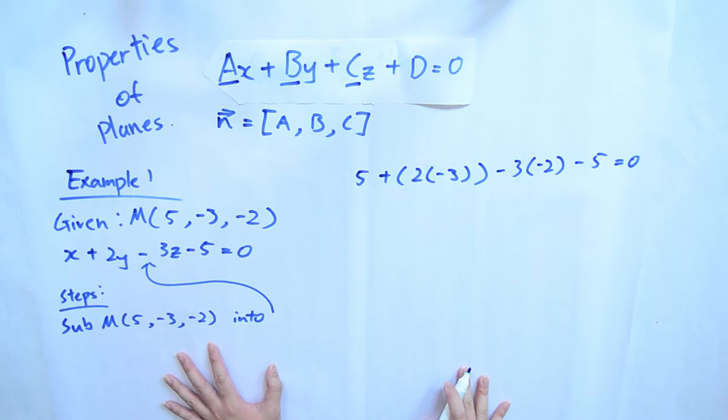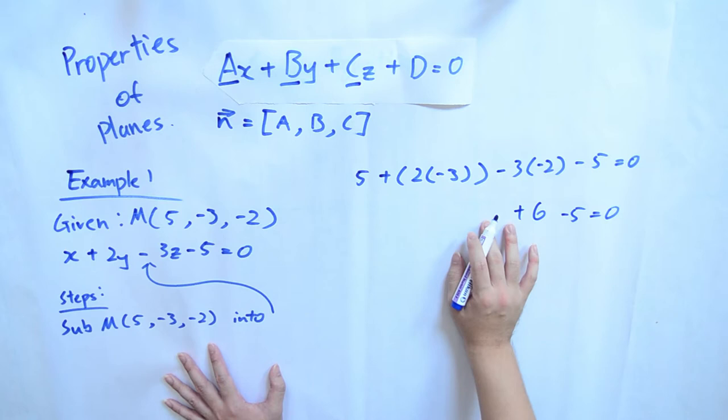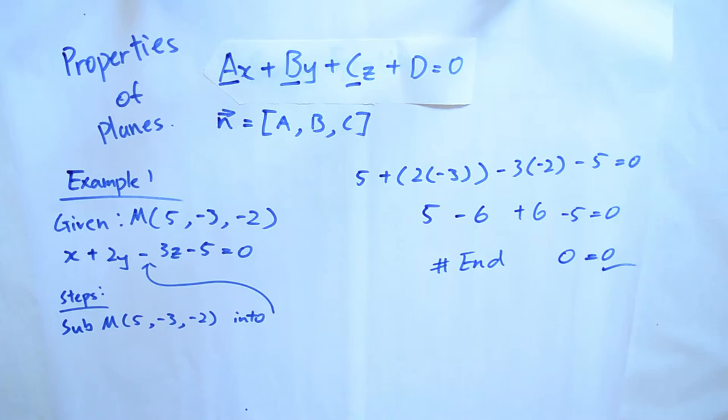After substituting, we multiply and check whether the left-hand side equals the right-hand side. If the final answer gives 0 equals 0, then the point lies on the plane. This is one example of how we use the scalar equation to determine if a point lies on the plane.